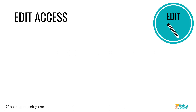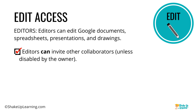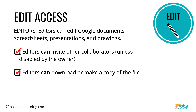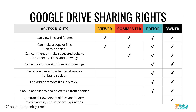The highest access level is edit. Editors can edit Google Docs, Spreadsheets, Presentations, and Drawings. Editors can also invite other collaborators, which you may or may not want. Editors can download or make a copy of the file unless you prevent it, and they can add or remove items in a folder. So you want to be very careful when you give edit access. There's a summary table available in the PDF download where you can see all rights side by side.